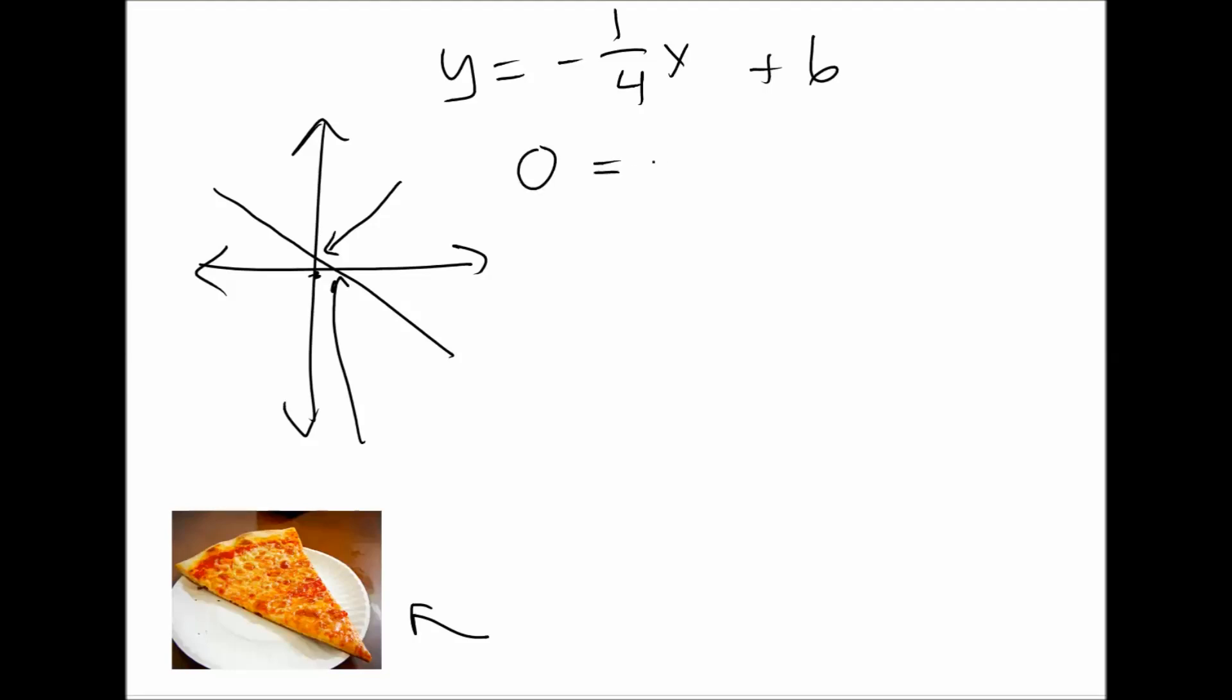So let's put y is 0 to find the x-intercept and solve it. So we have positive 24 equals x.